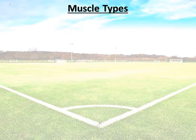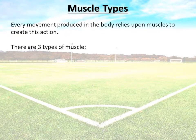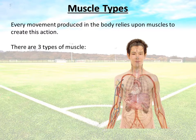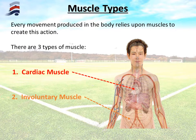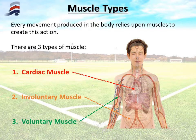First and foremost, looking at the different types of muscle in the body. There are three types. The first is known as cardiac muscle, located in the walls of the heart. The second type is known as involuntary, located in places such as the intestine and blood vessels. And lastly, voluntary muscle — the muscles you'll be more familiar with, such as the bicep, tricep, pectorals, etc.